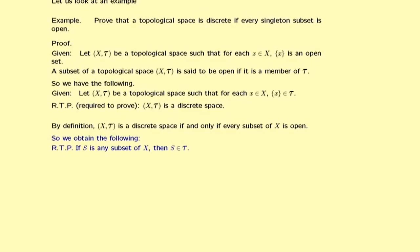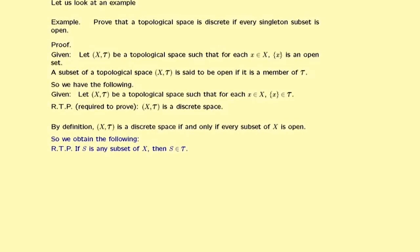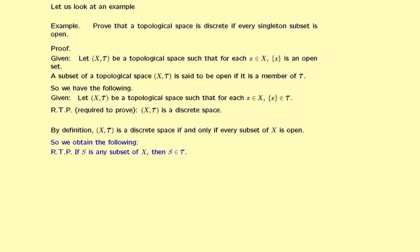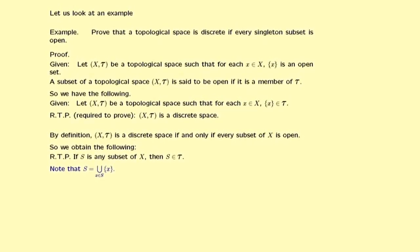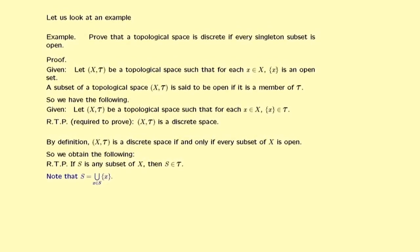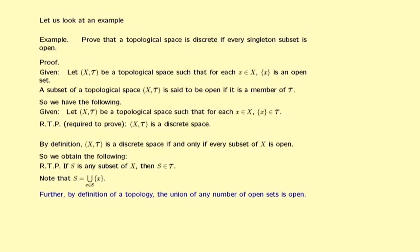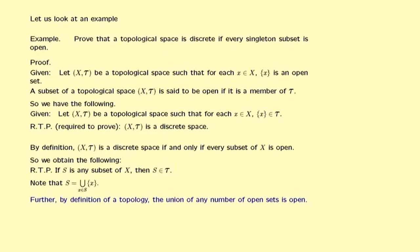Step 5 is to think. We have to somehow look at what we are required to prove — namely S is in τ — and use what we are given — namely the singleton sets {x} are in τ. But we note that S is the union of the singleton sets {x} as x runs through all members of S. Further, by the definition of a topology, the union of any number of open sets is open.